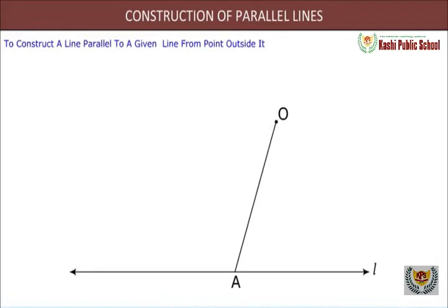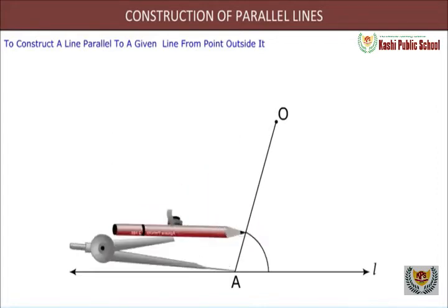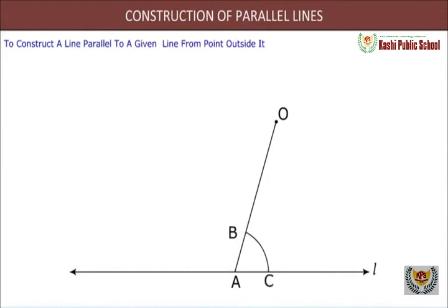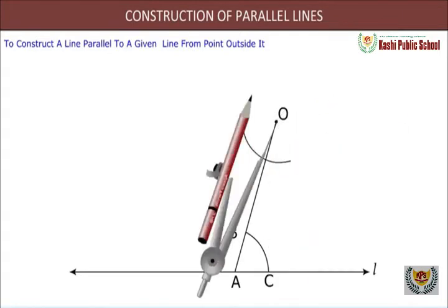Step 4: Now with O as center and taking the same radius as in step 3, we draw an arc PQ cutting OA at D.